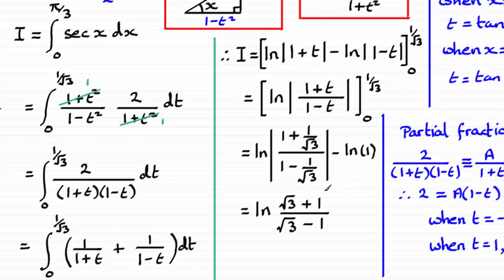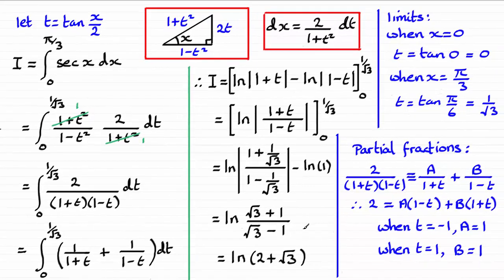You could leave it like this, or you might want to rationalize this by multiplying top and bottom by root 3 plus 1. If you do, you're going to end up with this result here: the natural log of 2 plus root 3. You'll notice I've taken the modulus signs off here and here purely because it's clearly a positive value.